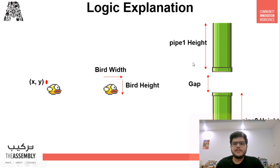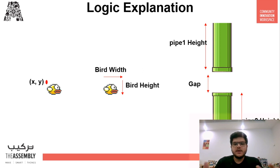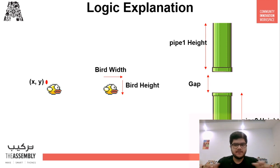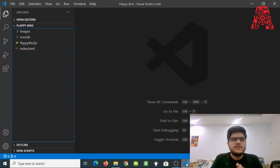The same concept applies to the pipes. We have the height of pipe one and pipe two, and there is a gap between them. We'll encounter this gap concept in the code as well. This is the basic understanding of coordinates you need before we start coding.